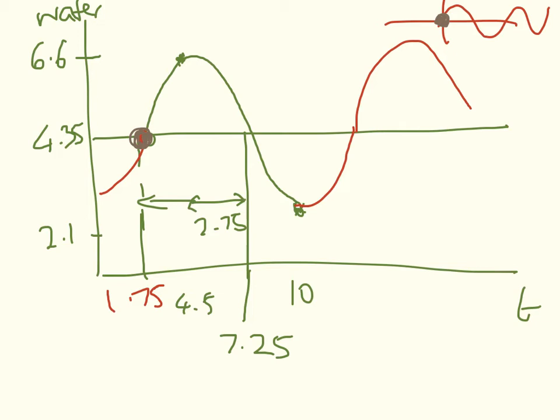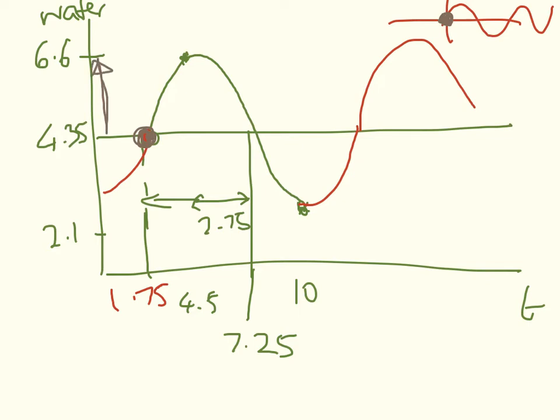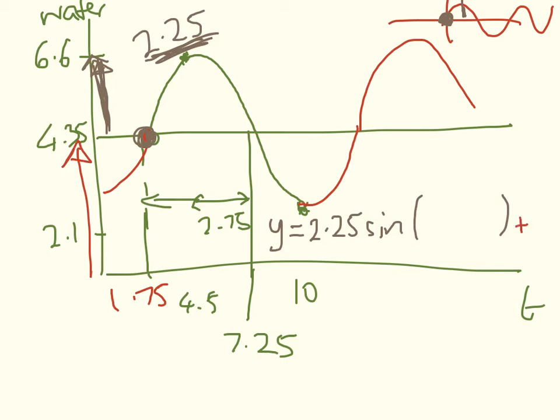The function is going to have this form. My stretch upwards is 2.25. This is the amplitude, and that's how I've done a vertical stretch, so that instead of going up to 1 above the midline, I'm going up 2.25. So we'll have y equals 2.25 sine of something. The vertical shift is really easy to get. We've gone up 4.35, so it's going to be plus 4.35.